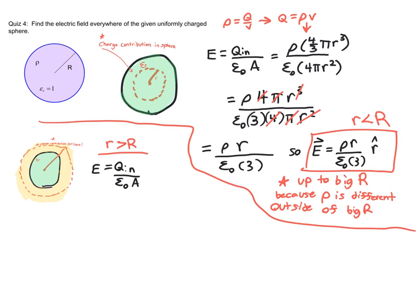For the next part of the question, we're going to look for when little R is bigger than big R, and that's going to change our equation a little bit. For the charge density, it actually stays static for big R.